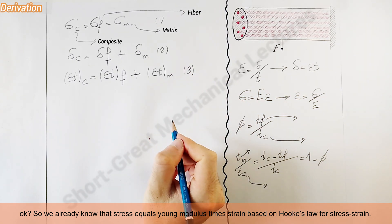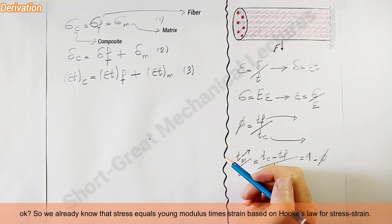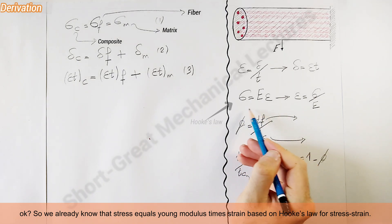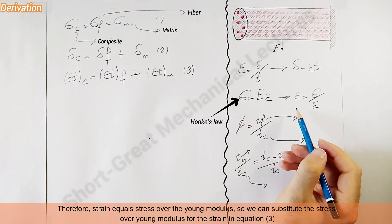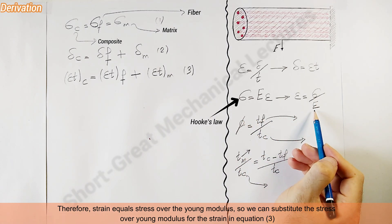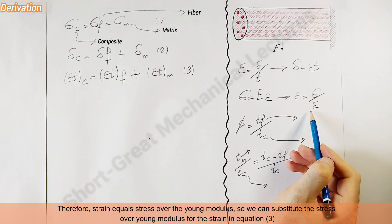We already know that stress equals Young's modulus times strain based on Hooke's law for stress-strain. Therefore, strain equals stress over the Young's modulus. So we can substitute the stress over Young's modulus for strain in equation three.